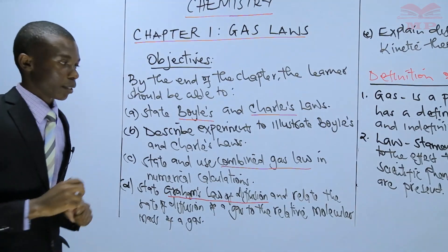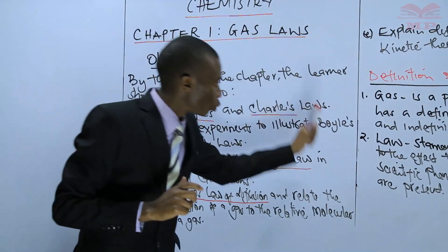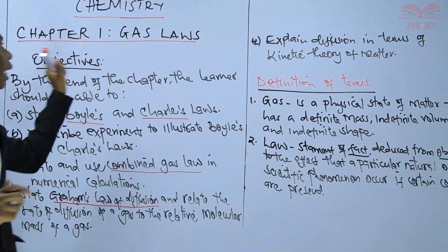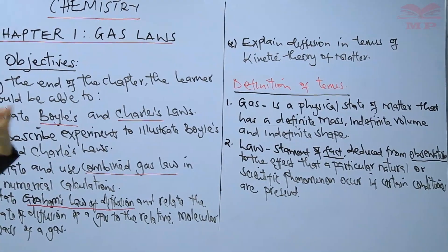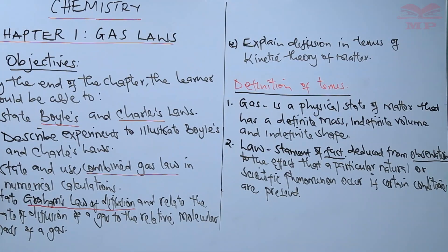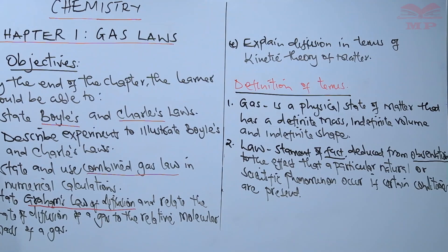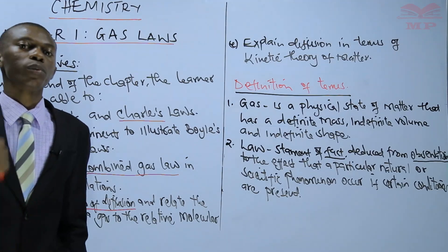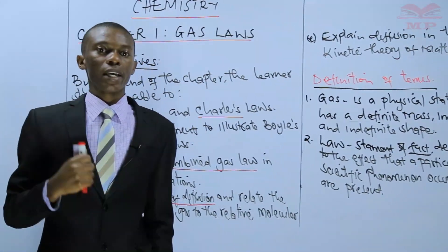Therefore, you need to know the correct definition for these two terms — a gas and a law. Therefore, gas laws refer to that physical state of matter which has a definite mass, indefinite volume, and indefinite shape, which has certain facts deduced from certain conditions which we are going to discuss later in this chapter.